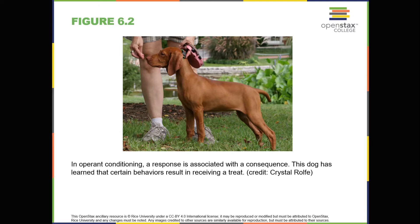Observational learning extends the effective range of both classical and operant conditioning. In contrast to classical and operant conditioning, in which learning occurs only through direct experience, observational learning is the process of watching others and then imitating what they do. A lot of learning among humans and other animals comes from observational learning. Consider Ben and his son Julian: by watching his father surf, Julian can imitate the moves that bring success and avoid the moves that lead to failure.